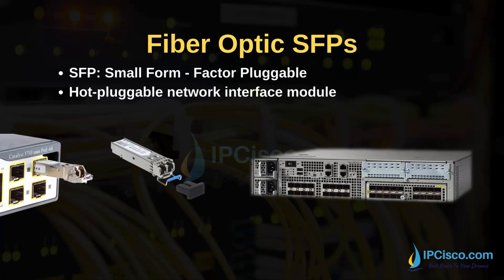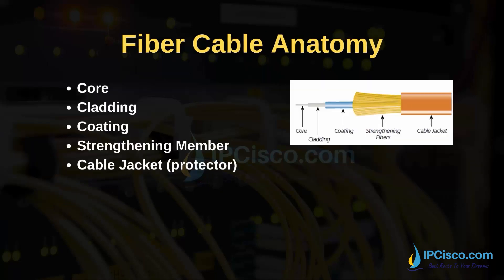SFP modules are especially used in service provider networks. Here is the anatomy of a fiber optic cable. There are five main parts: core, cladding, coating, strengthening fibers, and cable jacket. The core is responsible for transporting the light signals. The cladding surrounds the core and contains and reflects the light. The coating protects the core. The strengthening part prevents the cable from stretching or breaking if subjected to tension. The cable jacket protects the cable from any forces that can damage it.